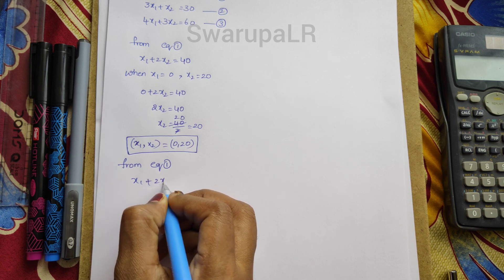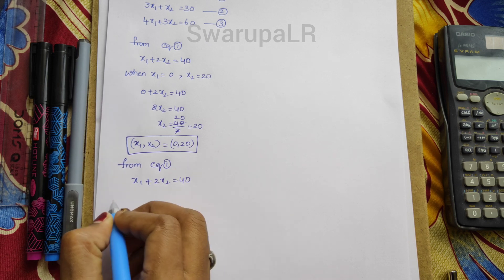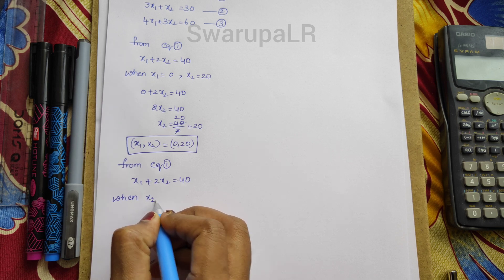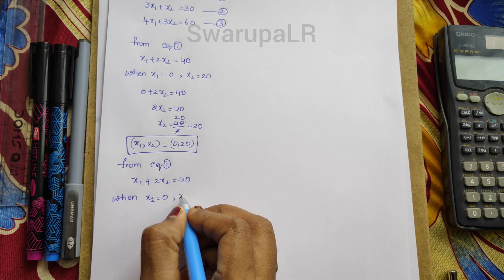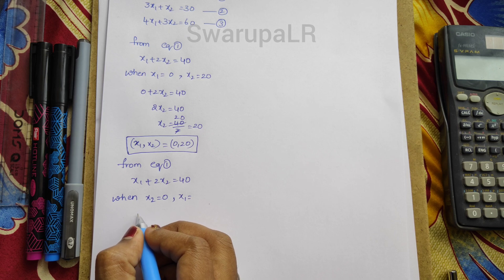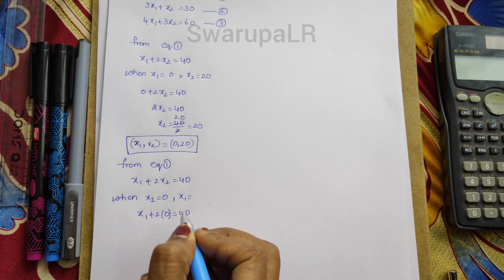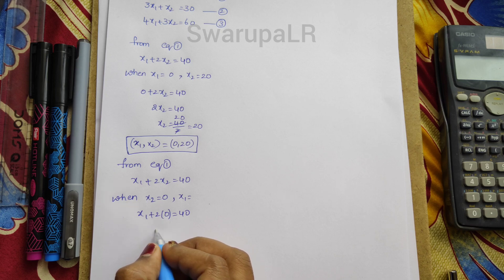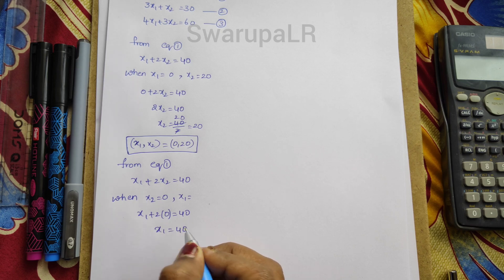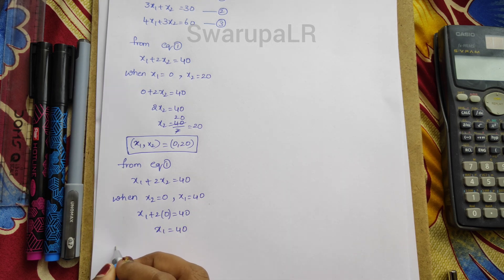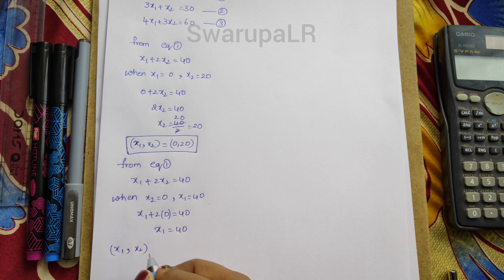From equation 1, when x2 equals 0: x1 plus 2 into 0 equals 40, so x1 equals 40. Therefore the second point from equation 1 is x1 comma x2 equals 40 comma 0.